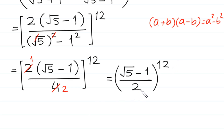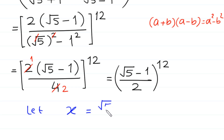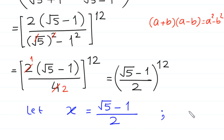Now the denominator of this expression is a rational number. We suppose this expression is equal to x. Let x equal (square root of 5 minus 1) divided by 2, and now we have to find the value of x to the power 12.